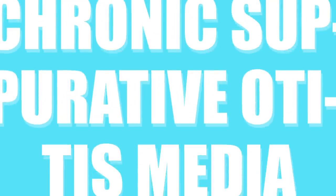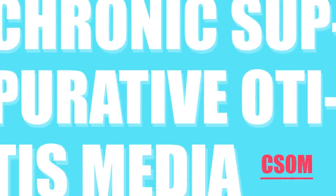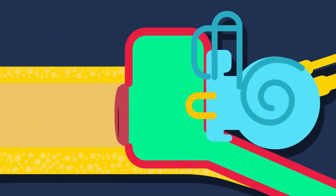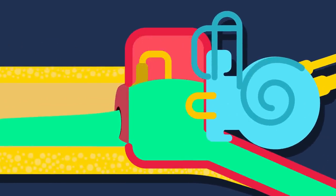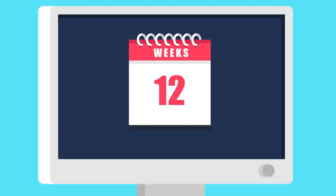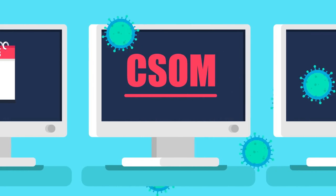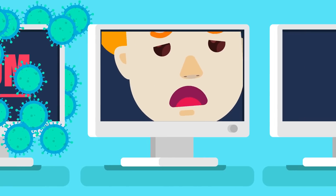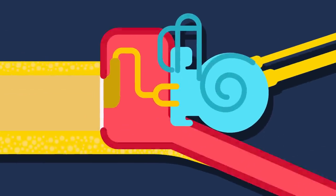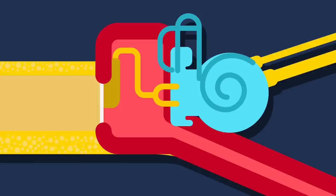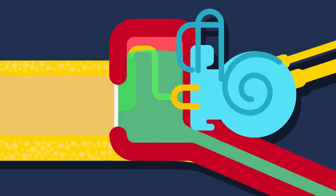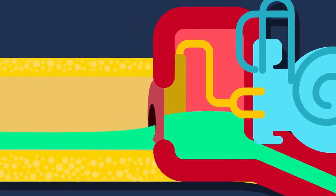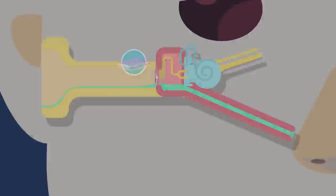Chronic suppurative otitis media (CSOM): simply put, CSOM is a perforated tympanic membrane with persistent drainage from the middle ear lasting more than 12 weeks. CSOM is initiated by an episode of acute infection. The pathophysiology begins with irritation and subsequent inflammation of the middle ear mucosa, creating mucosal edema and increased middle ear discharge, eventually leading to tympanic membrane perforation. A perforation becomes permanent when its edges are covered by squamous epithelium and it does not heal spontaneously.